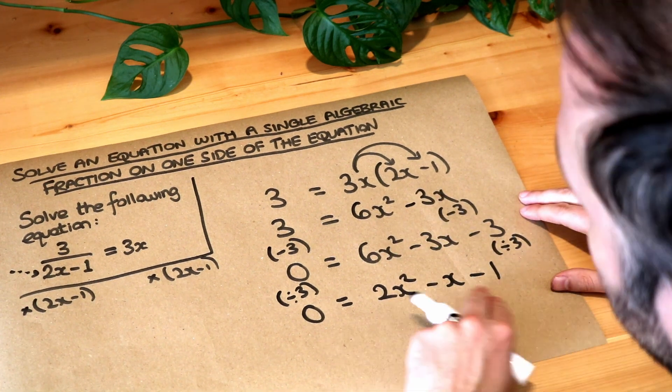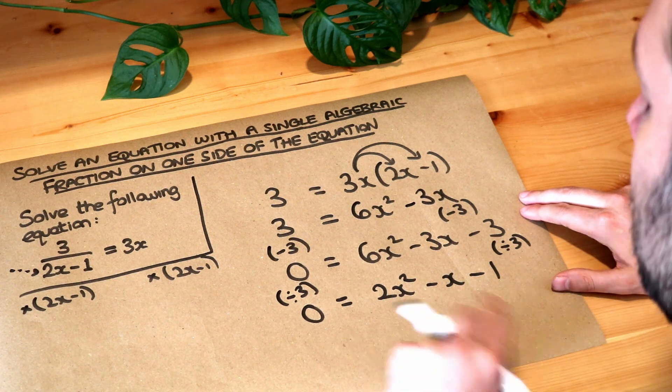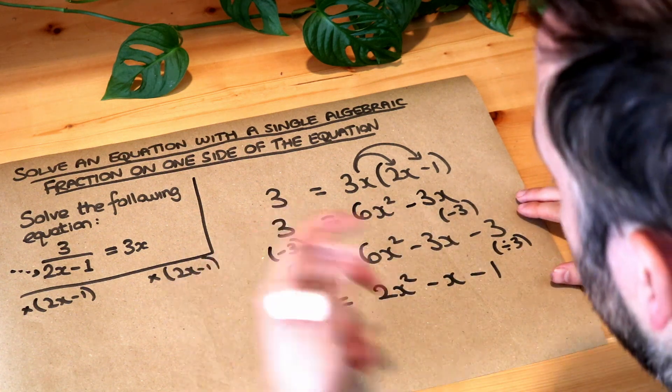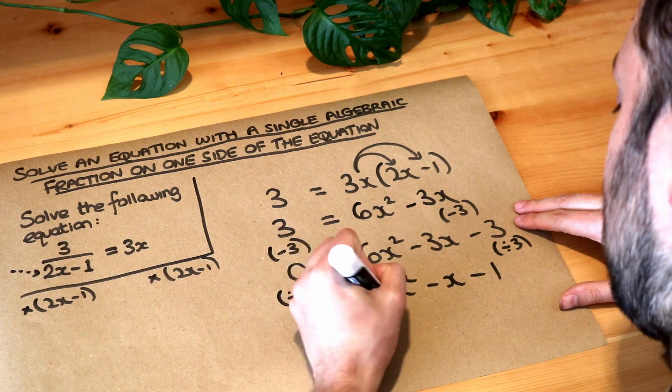And now we've got a quadratic. It's a slightly harder to solve quadratic because we've got a number in front of the x squared. We say this is a non-monic quadratic. In other videos I explore how you can split the middle term to factorize this, but I'm just going to do it by intelligent guessing just for the sake of time.